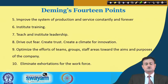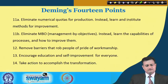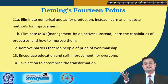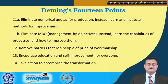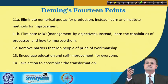Point 11a: eliminate numerical quotas for production; instead learn and institute methods for improvement — Deming believed you should not just say '20 percent improvement in productivity' but instead implement the methods that help you realize even better standards. Point 11b: eliminate MBO (management by objectives); instead learn the capabilities of processes and how to improve. The emphasis is on learning new methods and implementing them to strive for better results.